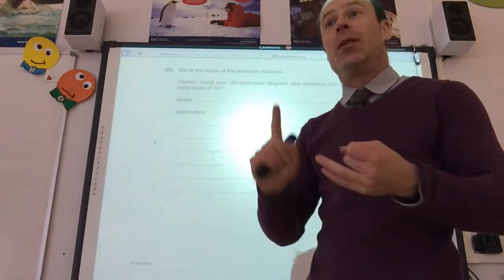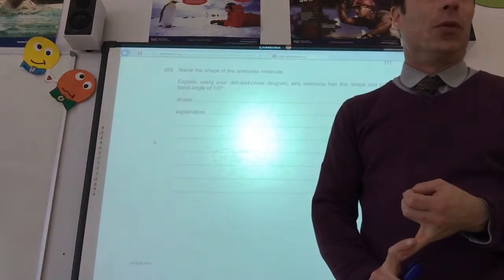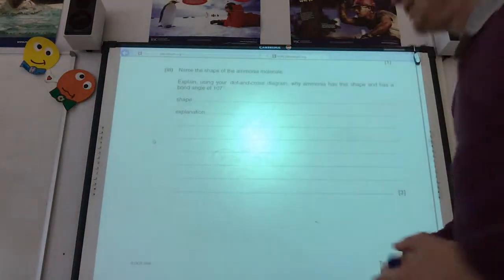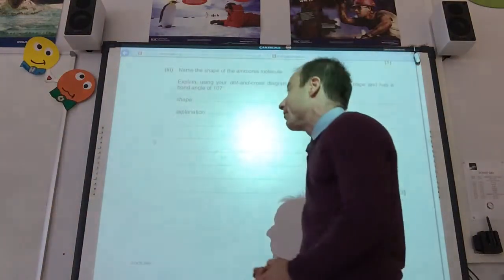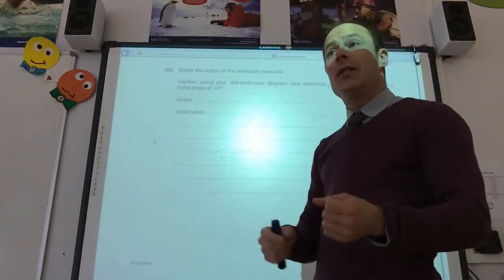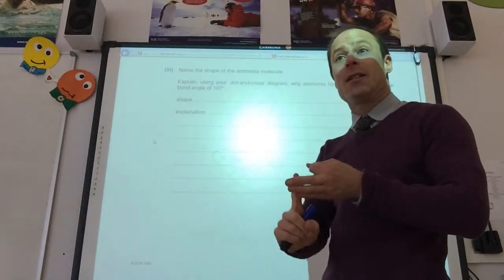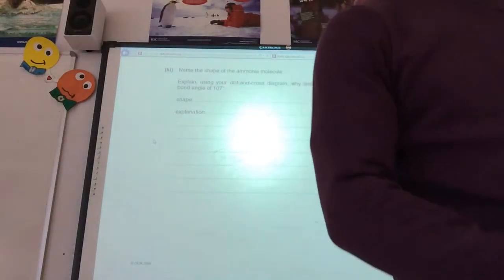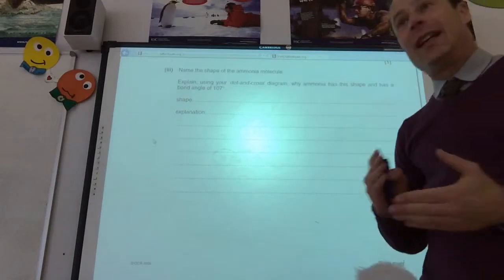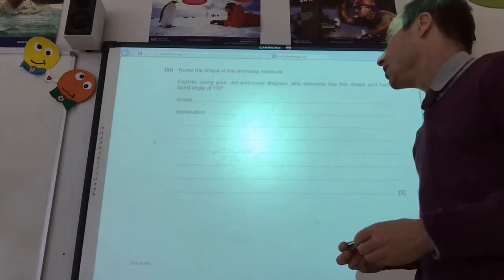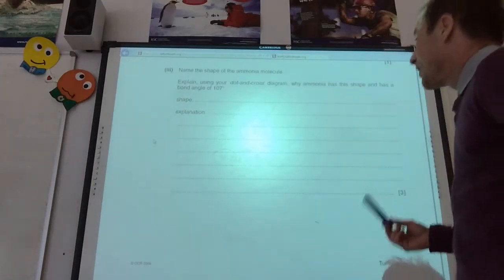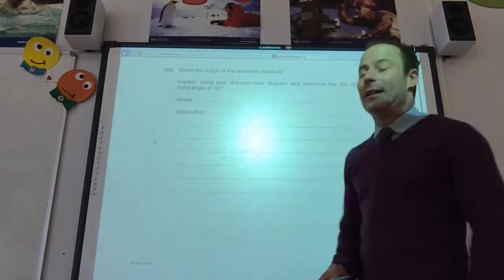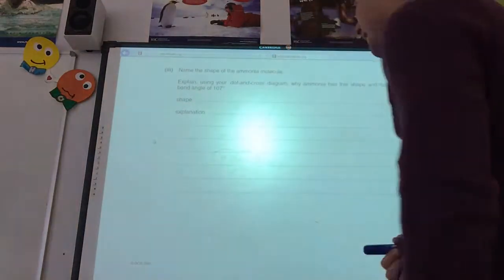So, electron pairs repel. Lone pairs repel more than bonded pairs. To get as far apart as they can from each other. Ammonium has got three bonding pairs and one lone pair of electrons. So, key things to always include in your answer. You know, it's three marks. Obviously, one mark for your shape. And then another couple for your explanation.